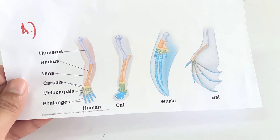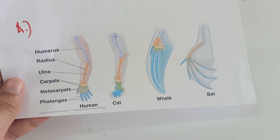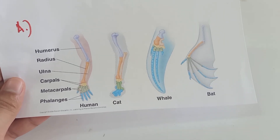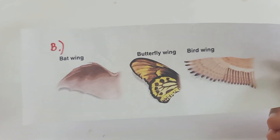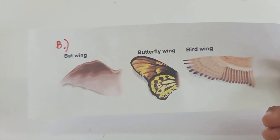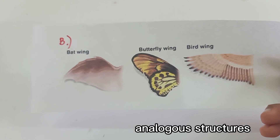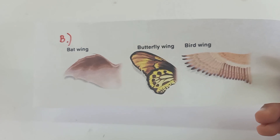What type of structures are shown in A and B? For letter A, the correct answer is homologous structures — these structures have the same internal structures but different functions. On the other hand, for letter B, these structures are analogous structures — they have the same function but are different in structure.